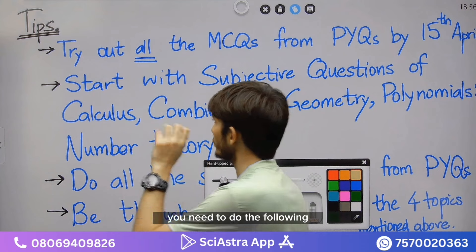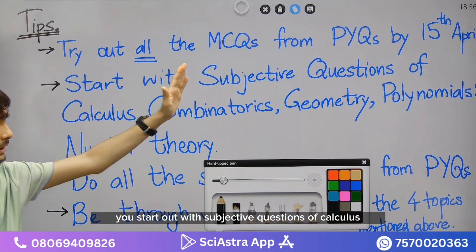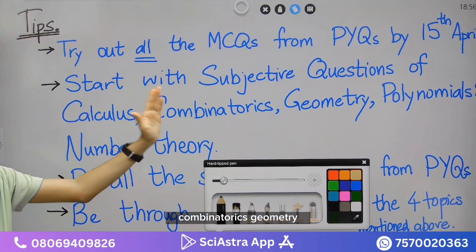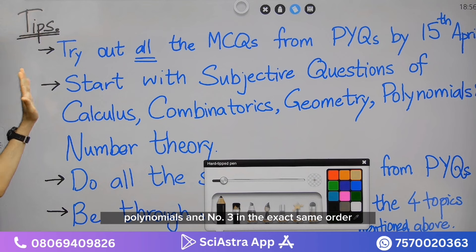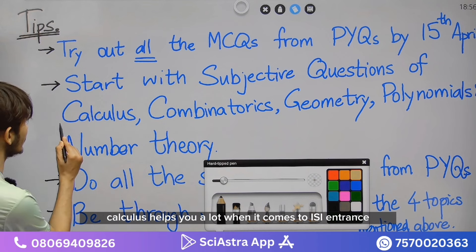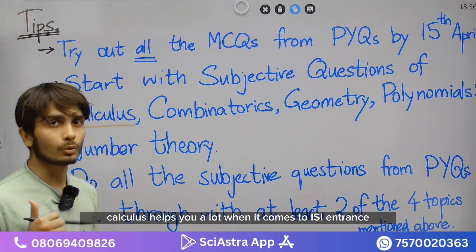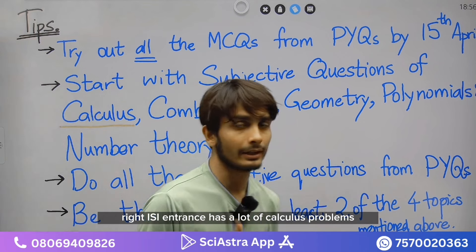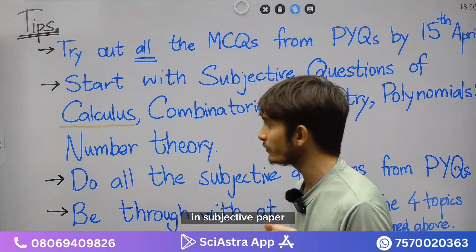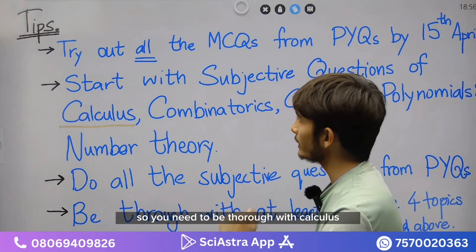You need to start out with subjective questions of calculus, combinatorics, geometry, polynomials, and number theory, in that exact order. Calculus helps you a lot when it comes to ISI entrance. ISI entrance has a lot of calculus problems in the subjective paper, so you need to be thorough with calculus.